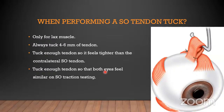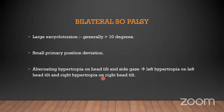For greater than 15 PD: weaken IO — recession of IO — plus typically one of the following: recession of contralateral IR, resection of ipsilateral SR if contracted, or SO tendon tuck if lax. When performing SO tendon tuck, always tuck four to six mm of tendon — enough so it feels tighter than the contralateral SO tendon, and so that both eyes feel similar on SO traction testing in primary position.